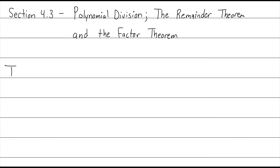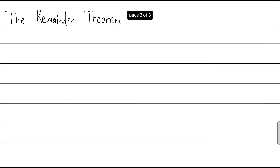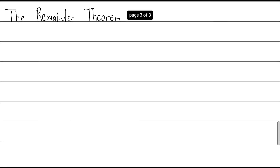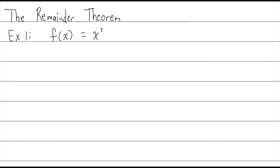First, let's talk about the remainder theorem, which is really interesting. I'll just do an example to illustrate what the remainder theorem says. Let's say we have a function f(x) = x squared minus 3x minus 5, and we wanted to find f of negative 1. For a simple function like this, it's easy to plug that in and figure it out.